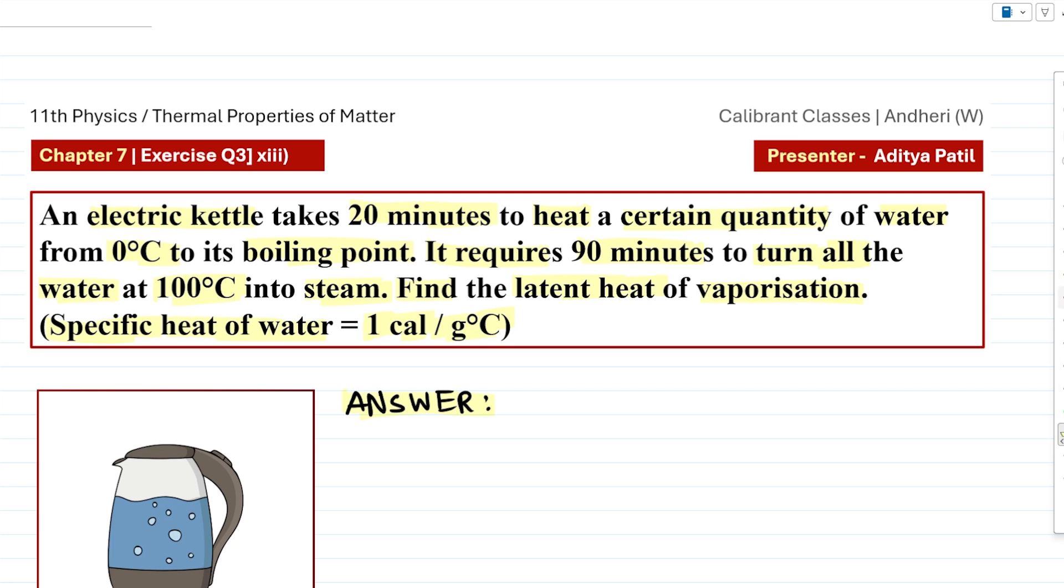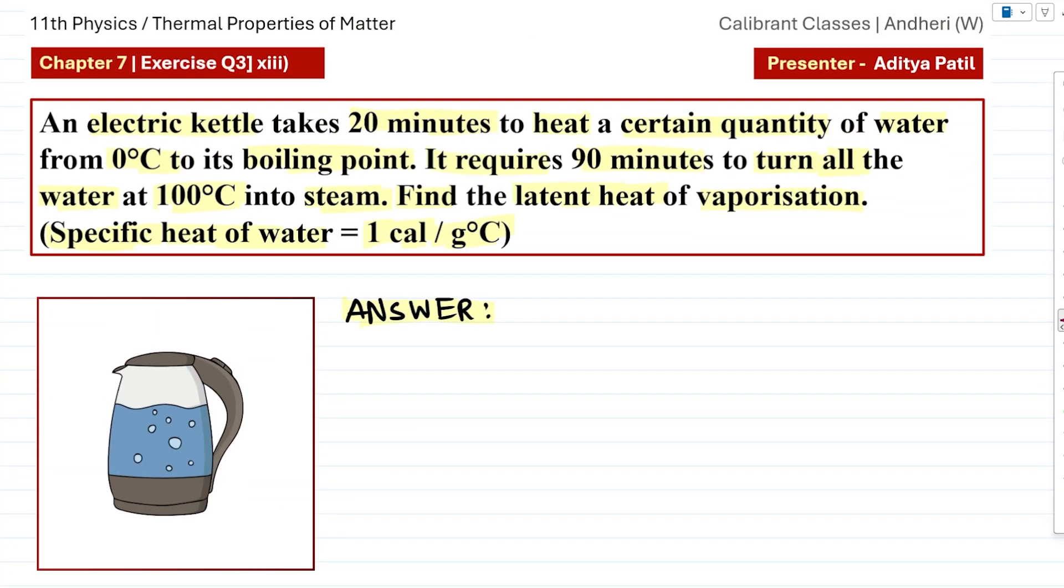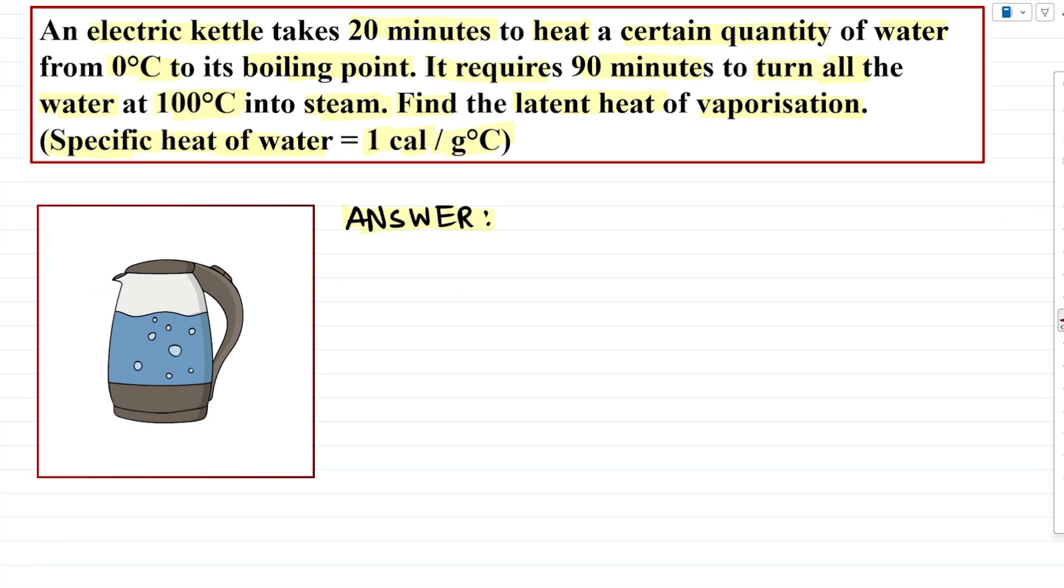Now let's try to understand this question using our diagram. The story is simple: we have an electric kettle and when we switch it on, initially it takes 20 minutes of time to change the temperature of water. The temperature rises from 0 to its boiling point. Then in the next 90 minutes, all the water which was at 100 degree Celsius changes its state. It gets converted into steam.